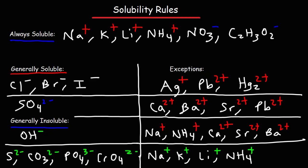In this video, we're going to talk about how to determine if a compound is soluble or insoluble using the solubility rules. A soluble compound is one that dissolves in water; one that is insoluble does not dissolve in water. In an ionic compound, if you see Group 1 metal ions like sodium, potassium, lithium, and rubidium — things in that column — they are always soluble. That's the general rule.